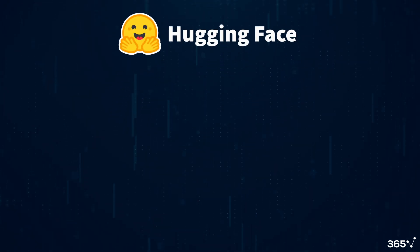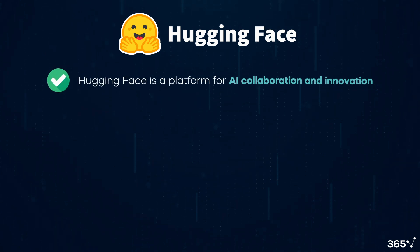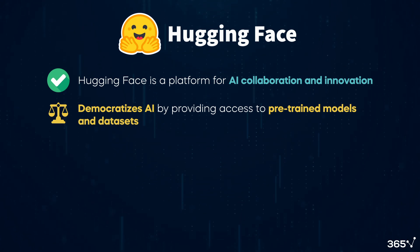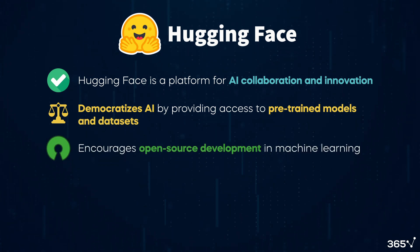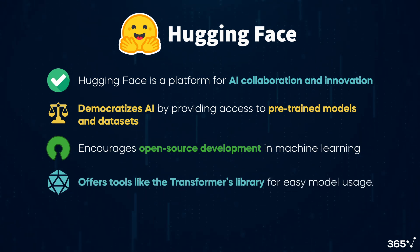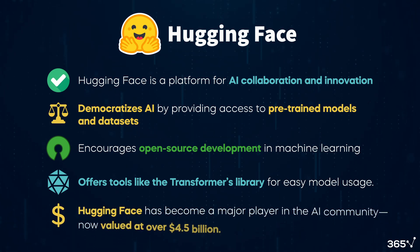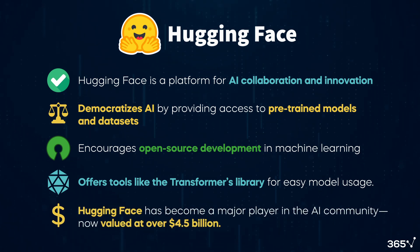Now, let's recap the key points we've covered in this video. Hugging Face is a platform for AI collaboration and innovation. It democratizes AI by providing access to pre-trained models and datasets. The platform encourages open-source development in machine learning. It offers tools like the Transformers library for easy model usage. And finally, Hugging Face has become a major player in the AI community, now valued at over $4.5 billion dollars.